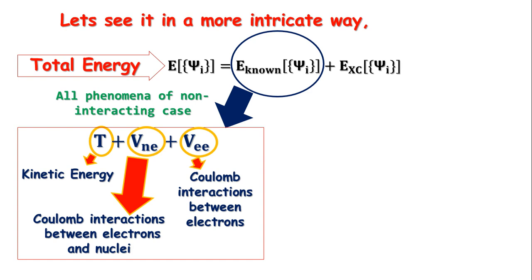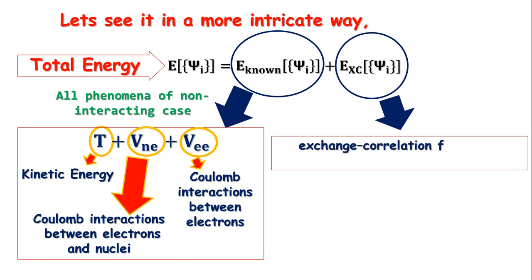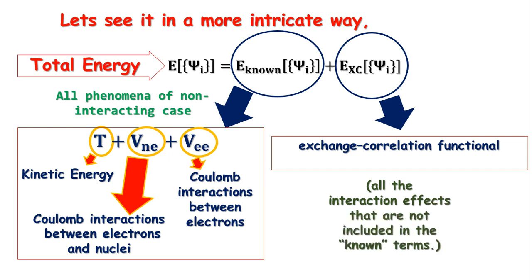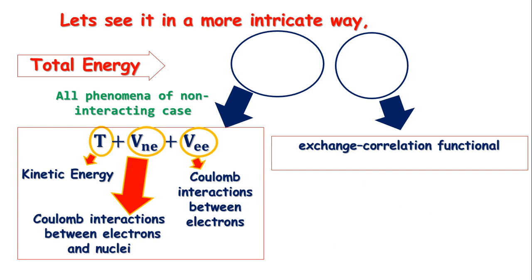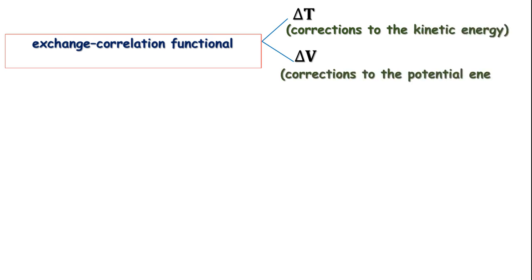And this EXC is called the exchange-correlation functional, which includes all the quantum mechanical interaction effects that are not included in the known terms. Now let us focus on the exchange-correlation functional only. This functional consists of two terms: ΔT and ΔV, where ΔT is the compensatory correction to the kinetic energy, and ΔV is the correction to the potential energy. Now let's try to first understand the term exchange.